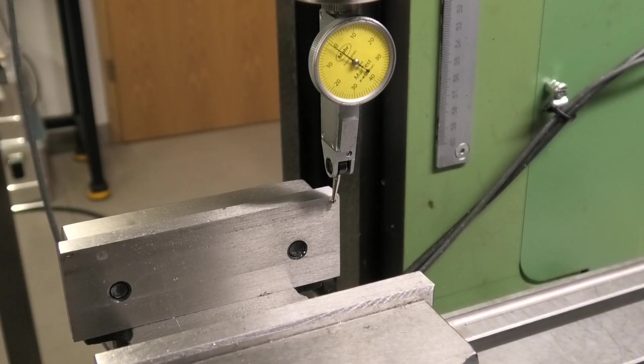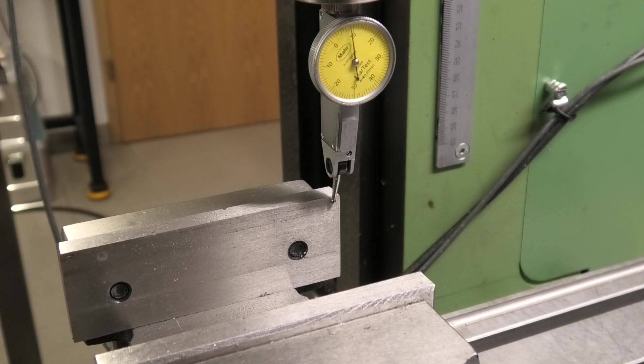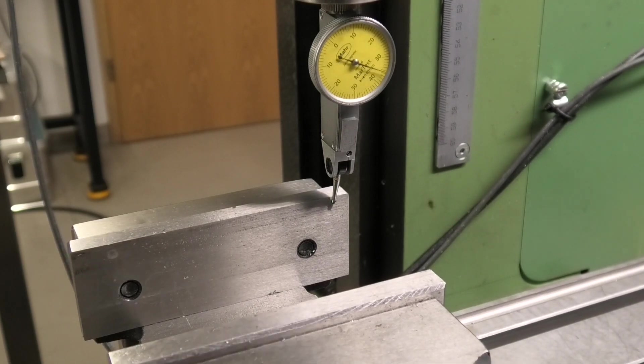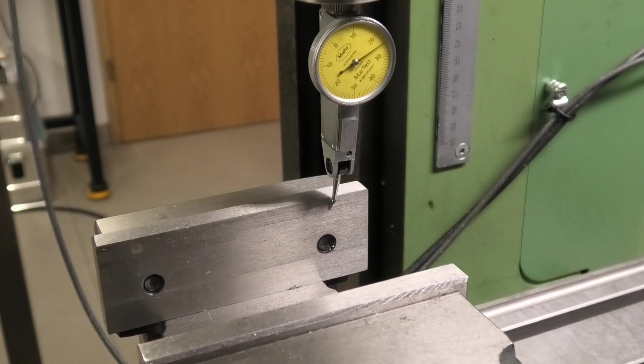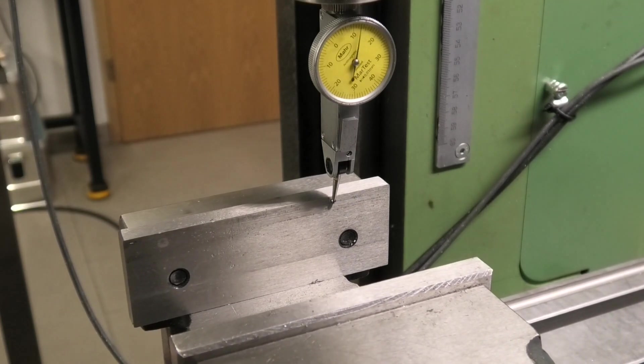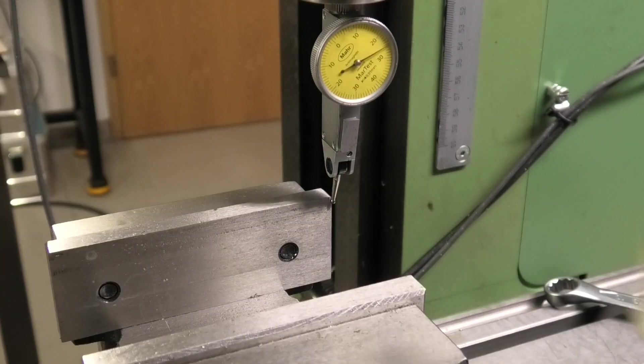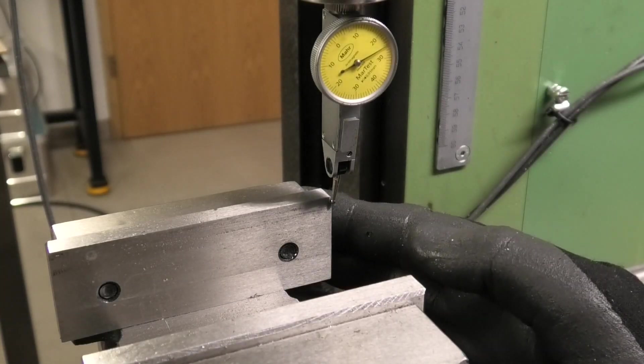Next, make sure the fixed jaw of the machine vise is parallel to the x-axis. You can do this with a dial gauge that you clamp into the drill chuck. The drill chuck must be blocked. Now move the machine table along the x-axis.